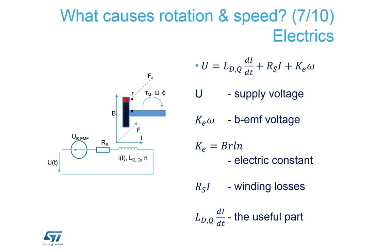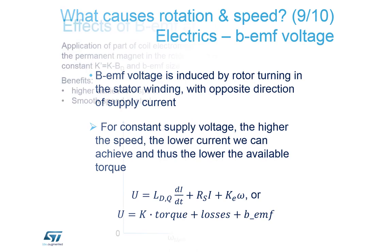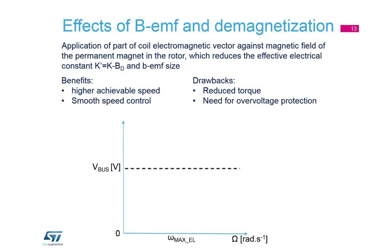There is one advantage: the back-EMF doesn't dissipate power as heat. Coming back to the voltage equation, we have bus voltage, losses, back-EMF, and the inductive term. As speed increases, the back-EMF voltages increase and the useful operating range decreases. The inductance of the winding — described as L multiplied by the derivative of current over time — consumes the remaining useful voltage at high speeds, meaning the higher the speed, the lower the torque we can deliver.